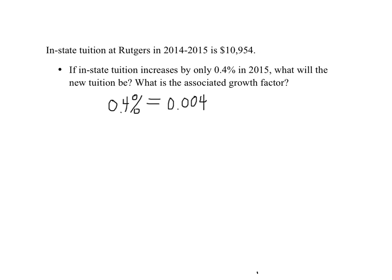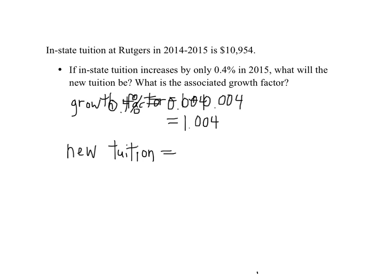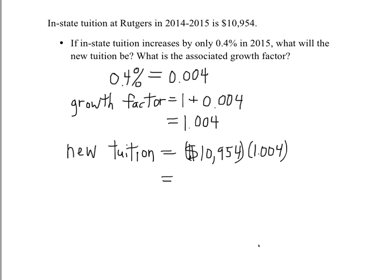You can't multiply 0.4 by the original tuition. Our growth factor here is 1 plus this number in decimal form, 0.004. That growth factor times the original tuition will tell us the new tuition. This turns out to equal $10,997.82.